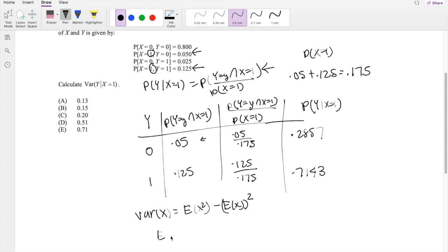So then what is our expectation second moment? Well, that's just 0 squared times the probability 0.2857 plus 1 squared times 0.7143, which is just equal to 0.7143.